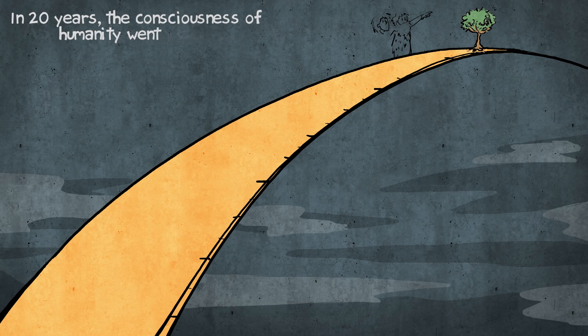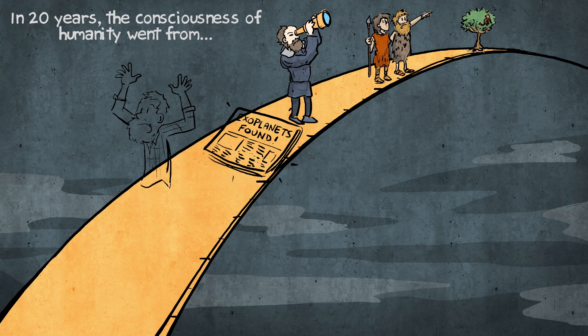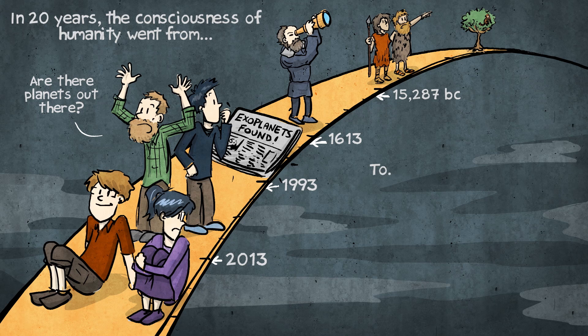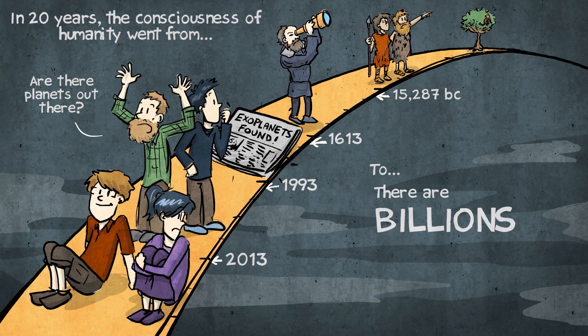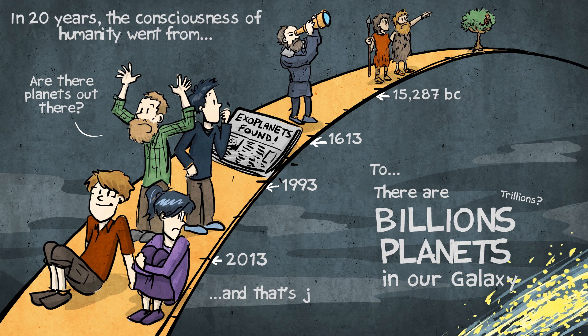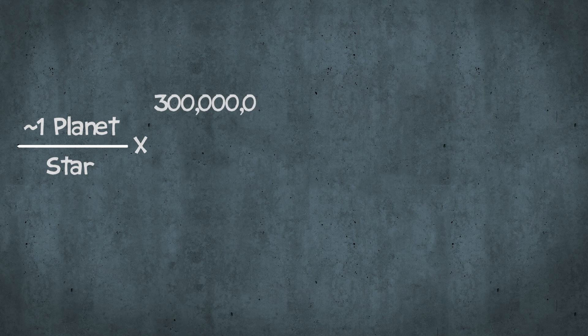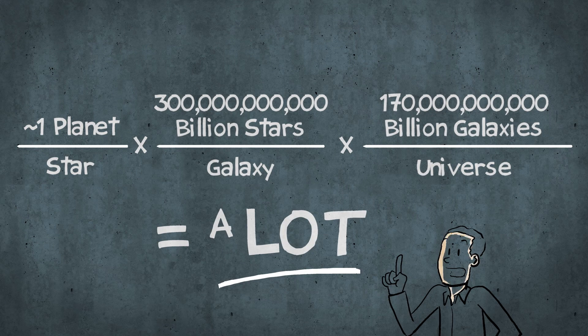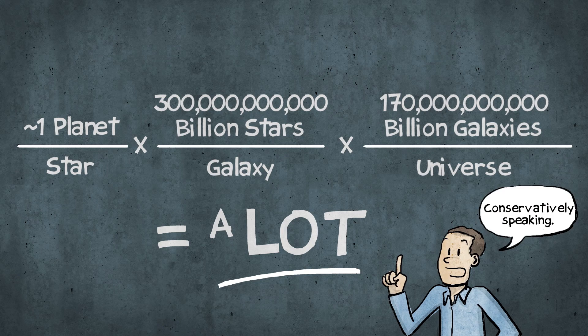So the thing is, in 20 years, the consciousness of humanity went from, gosh, I wish there's got to be like some planets out there, right? 20 years ago, right? To now, there are literally billions, maybe trillions, of planets in our galaxy. And that's just our galaxy. Yeah, the same number of stars that there are in our galaxy is the same number of galaxies in the universe. Roughly, yeah. So there's a billion times a billion planets. Yeah. Conservatively speaking.